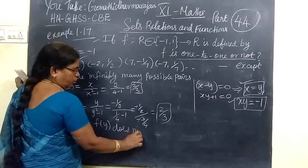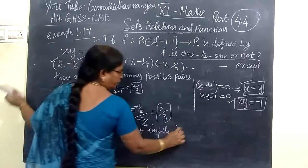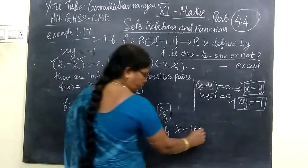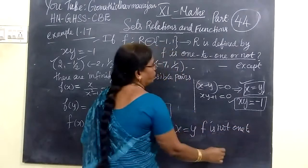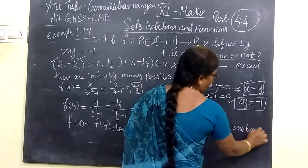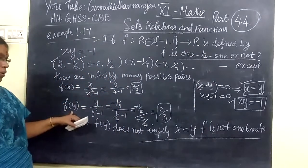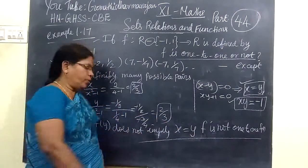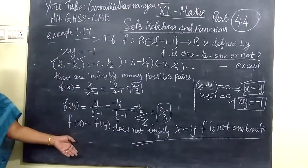So here f(x) = f(y), but x = 2 and y = -1/2, so x does not equal y. Therefore, f is not a 1-to-1 function. We see next problem. Thank you.